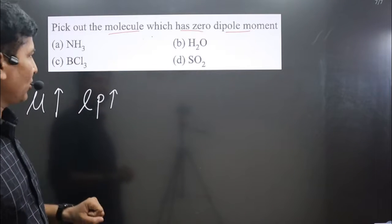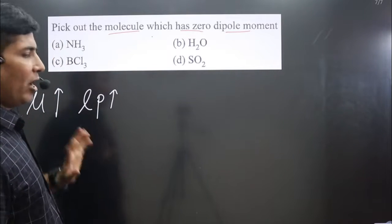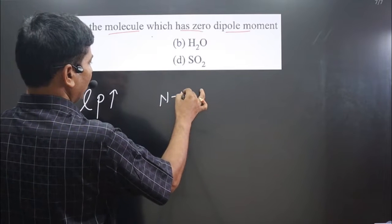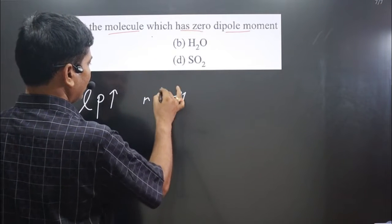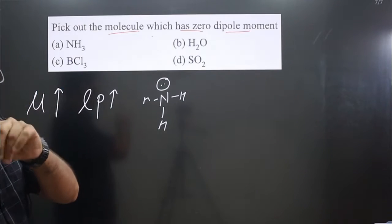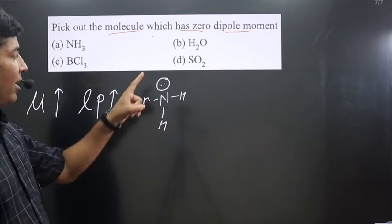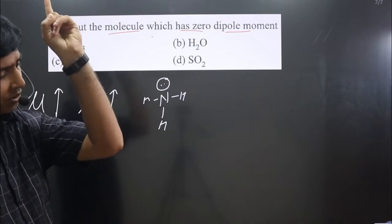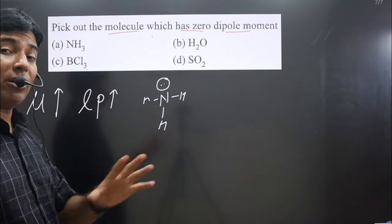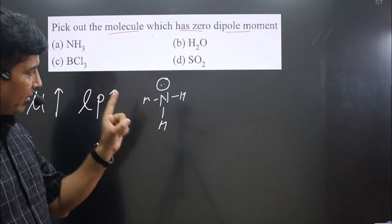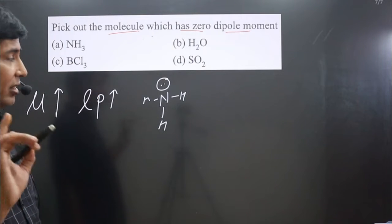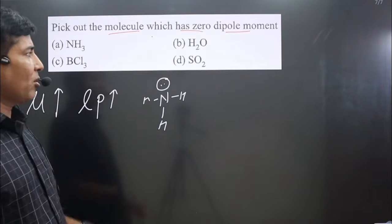Let's draw the structure. First, we have the ammonia molecule. Nitrogen is having one lone pair and it can form three bonds. Since lone pair is present on the central element, dipole moment is definitely there — it is polar by nature, dipole moment cannot be zero.